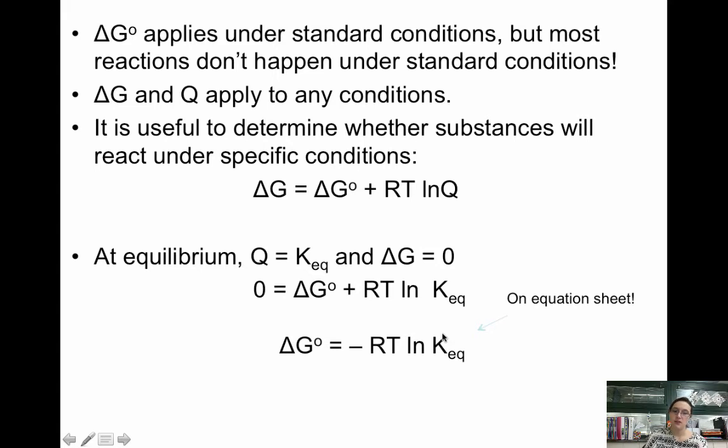If we wanted to rearrange to solve for K, we could get K equals e to the negative delta G over RT. This is essentially inverse ln. However, this one up here is the one that's on your equation sheet. You just need to know how to rearrange and get K on the side by itself. This allows us to go between delta G and K.